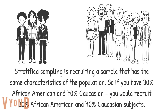Stratified sampling is a strategy to make your sample representative of the population by recruiting the same proportion of people in each group relative to the population. For example, if the population is 70% Caucasian and 30% African American, you would recruit a sample that is 70% Caucasian and 30% African American. This is called stratified sampling.